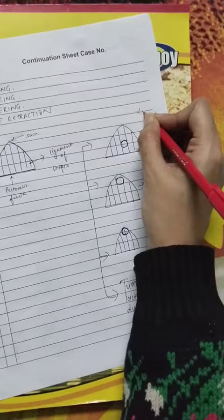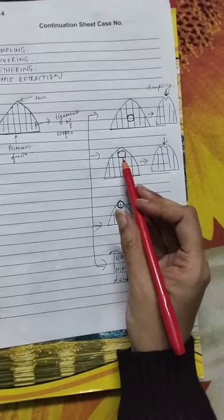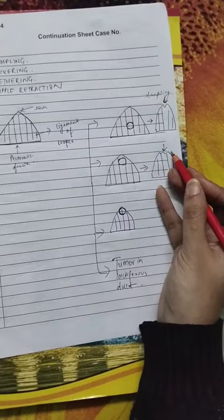When the tumor is near to the skin surface but has not touched the skin surface, you see an undulated appearance on the skin, which is called puckering.